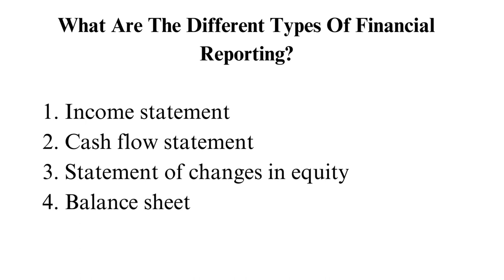4. Balance sheet. A balance sheet shows what the firm owns versus what it owes — assets and liabilities — and helps evaluate a business. It includes items such as receivables, payables, shareholder equity, inventory, prepaid expenses, and many more. Oftentimes, these numbers are negative since companies may have large debts.